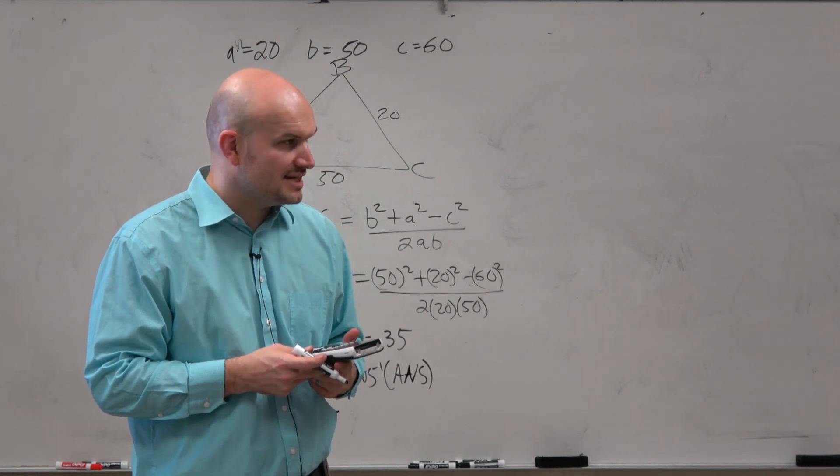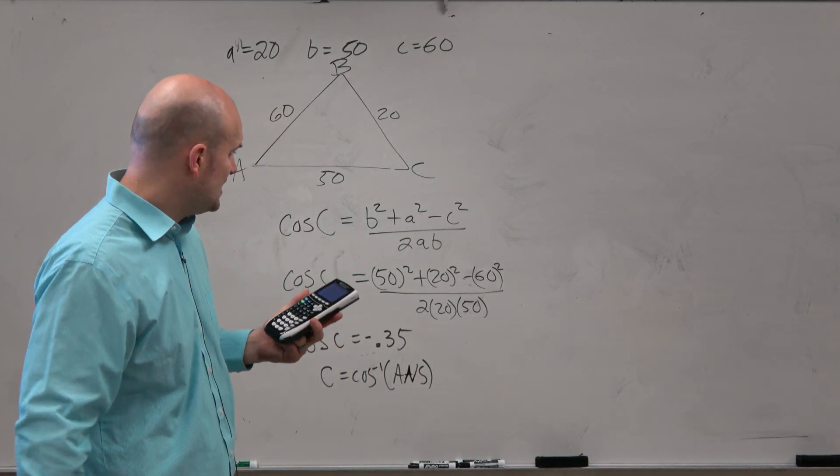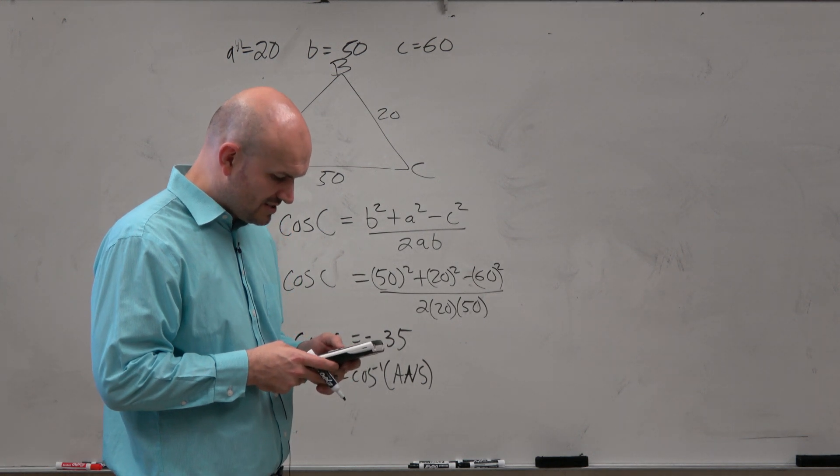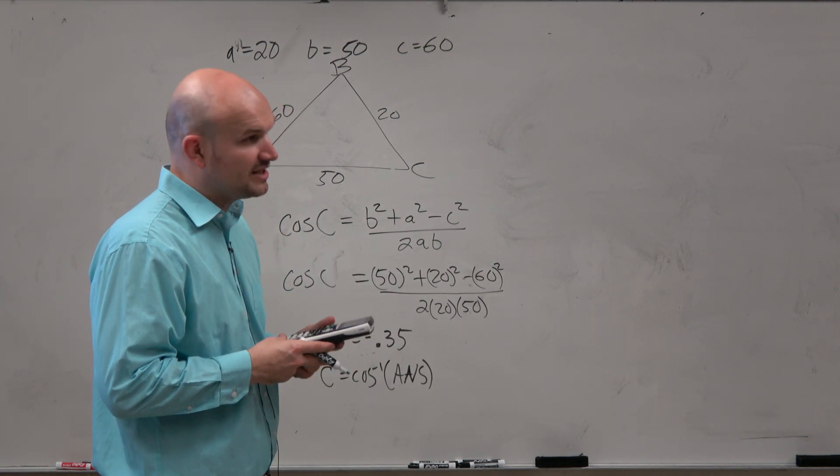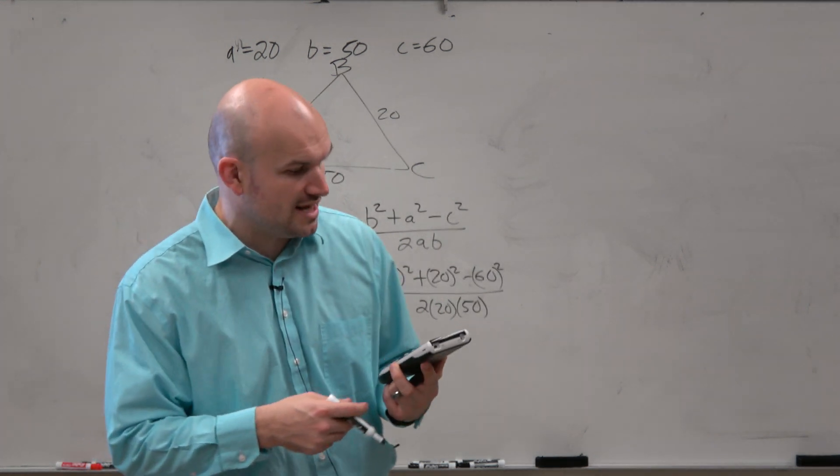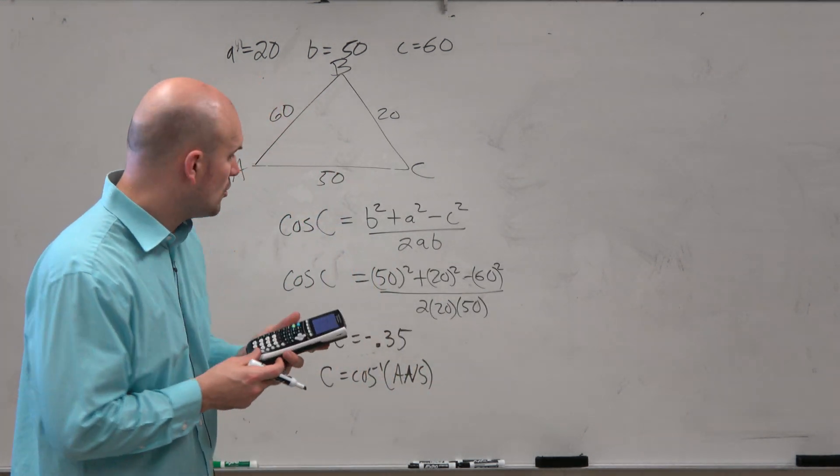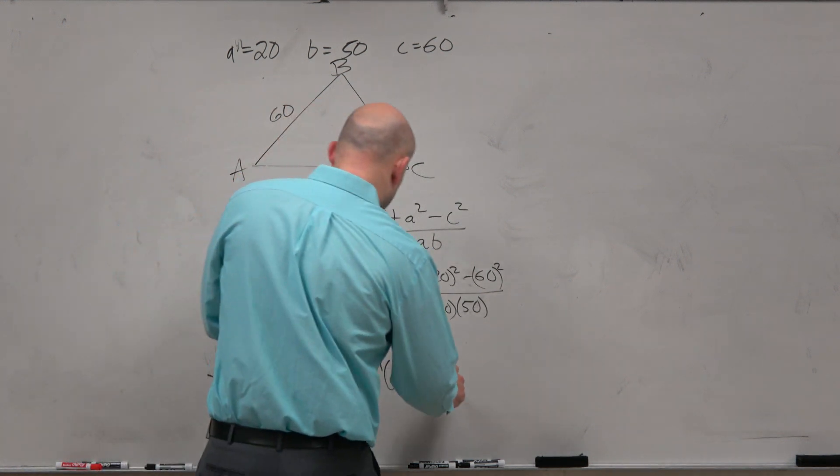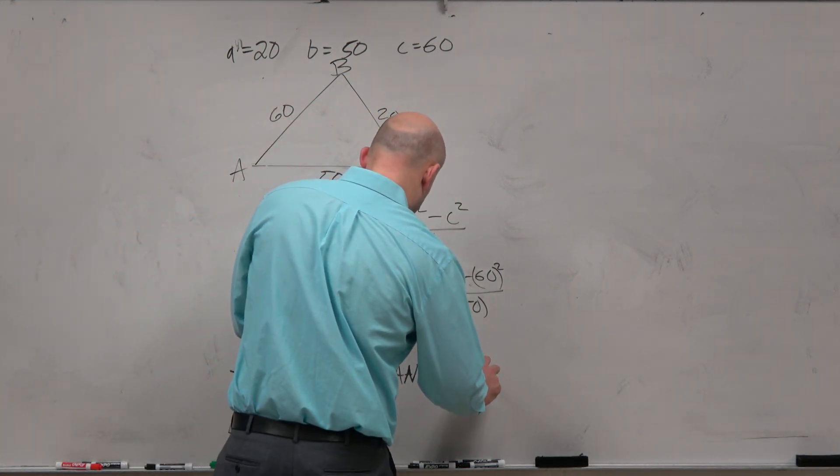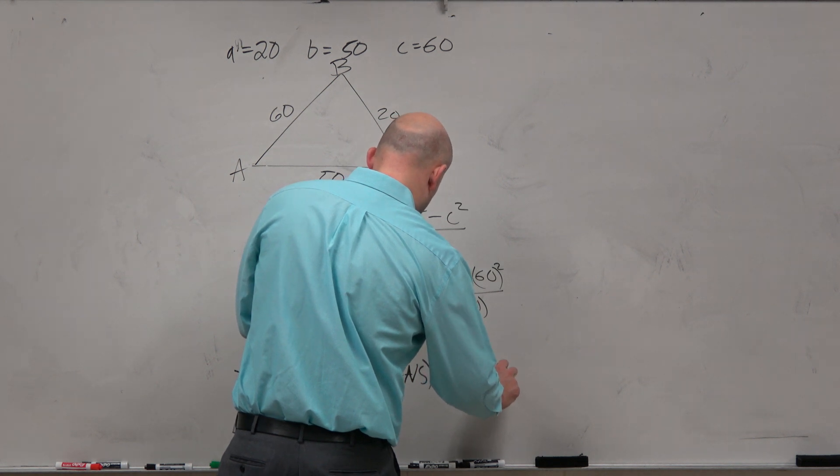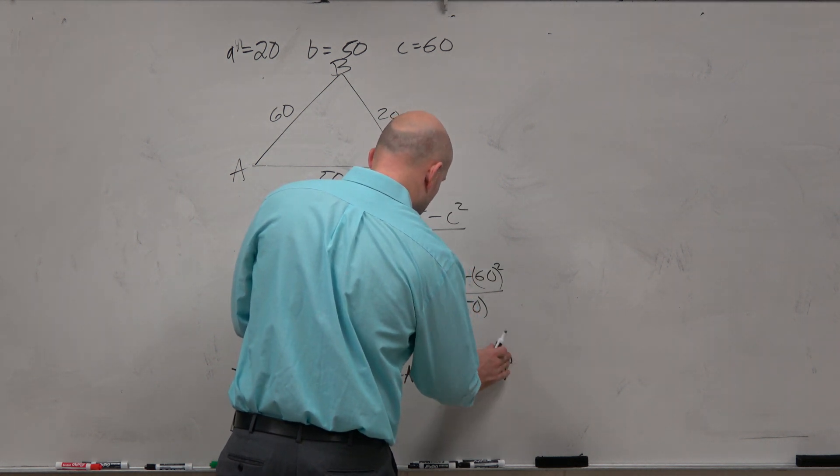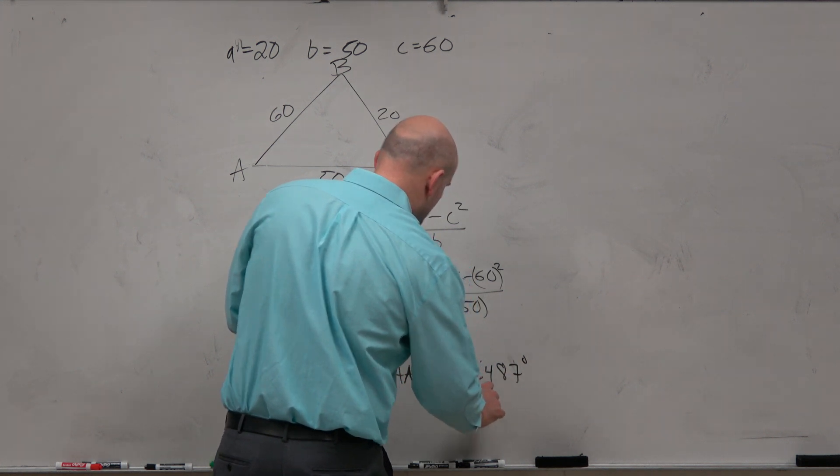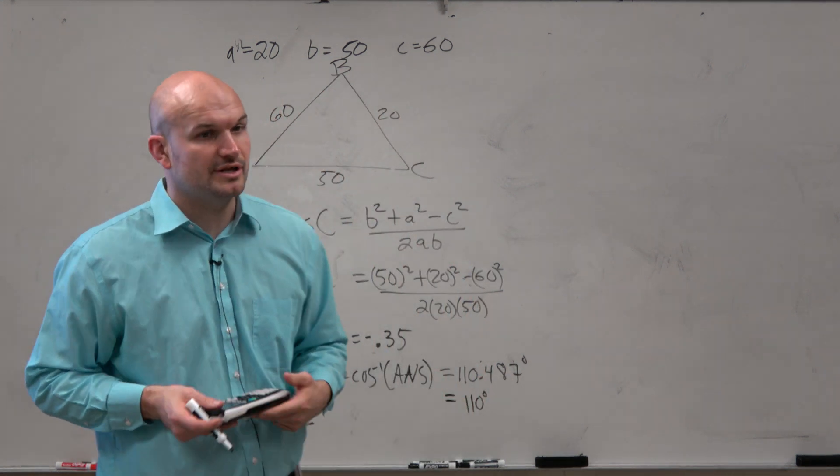Now, I know you guys could easily retype in negative 0.35. But the point that I'm trying to bring to you is go ahead and use the second answer feature. So hit cosine inverse, second cosine, and then do second answer. Because other problems that we're going to do later today are going to be more difficult. You're not going to want to type in all the digits. So therefore, when you do that, you should get 110.487 degrees, which equals 110 degrees, because I would allow you to round to the nearest whole.